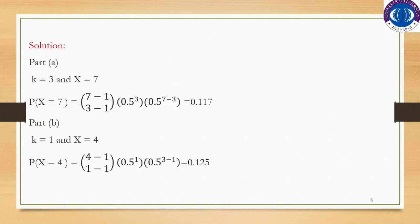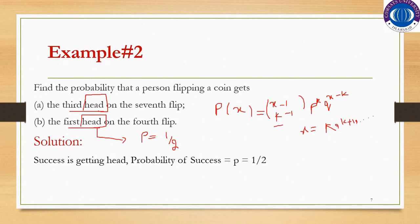K indicates the number of successes, so K = 3. The third head occurs on the seventh flip, so X = 7. Substituting X = 7, K = 3, P = 0.5, and Q = 0.5 into the probability mass function of the Negative Binomial Distribution, we get 0.117.